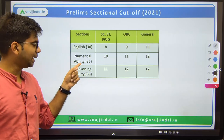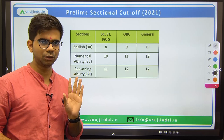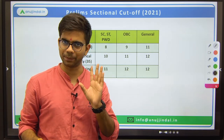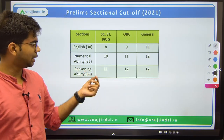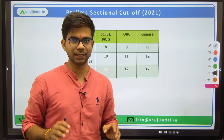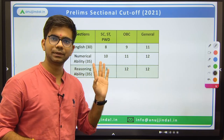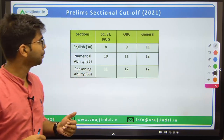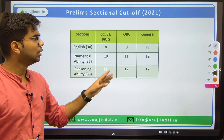In prelims you have three sections: English (30 questions), Numerical Ability or Maths (35 questions), and Reasoning Ability (35 questions) — so 100 questions of 100 marks total. Each question carries one mark with one-fourth negative marking. You get 20 minutes each for each section, so there is sectional timing. In both prelims and mains there is a sectional cutoff as well as an overall cutoff. For prelims, the sectional cutoff for General is 11 for English, 12 for Numerical Ability, and 12 for Reasoning.